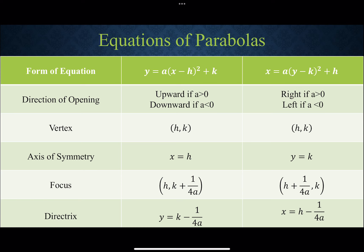The axis of symmetry always goes through the vertex: x equals h when it's vertical, y equals k when it's horizontal. The focus point is (h, k) adjusted by positive 1 over 4a — adjusting k (the y coordinate) when vertical, and h (the x coordinate) when horizontal. The directrix uses the same adjustment but subtracts 1 over 4a instead of adding it.